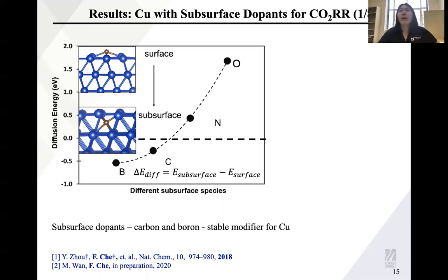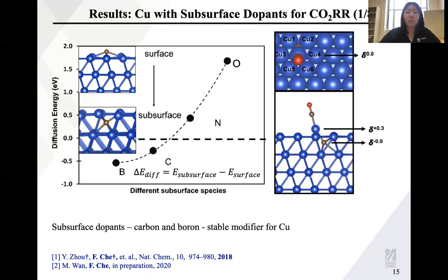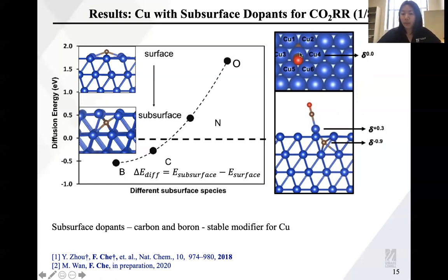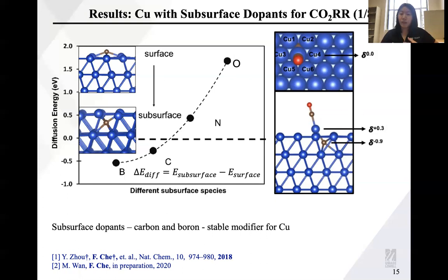We then asked whether boron or carbon can modify the copper catalyst to generate Cu+ and metallic copper regions. We performed a charge analysis of the boron- or carbon-doped copper catalyst. We found that when the dopant — boron or carbon — stays at the subsurface, the nearby copper atoms carry a positive charge (Cu+), while copper atoms farther away remain metallic (Cu0). This gives us confidence that the subsurface modifier can generate the desired Cu0/Cu+ interface.